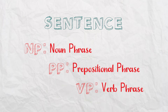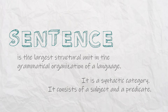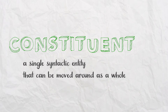In the same way that a word has a category, a phrase also has a category. Of course, a sentence itself is also a syntactic category, but that's the biggest syntactic category — that's why we call it the largest unit of grammatical organization. A constituent means it's a single syntactic entity and can be moved around together, but not if broken apart.